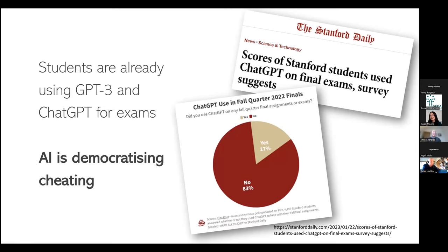Students are already using GPT-3 and ChatGPT for exams. There's been very little hard evidence, but this is one survey of over 4,000 students at Stanford University, back in November last year when ChatGPT was only just being introduced. Students were asked: did you use ChatGPT on any full quarter final assignments or exams? A quarter of them were already using ChatGPT or GPT-3 for their final assignments. In a sense, AI is democratizing cheating — in the past you had to pay somebody a fair amount of money to write your assignment; now you can type the assignment title into ChatGPT, press the button, and it writes it for you.